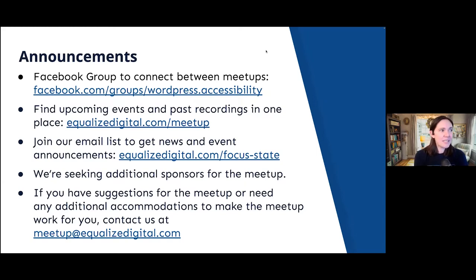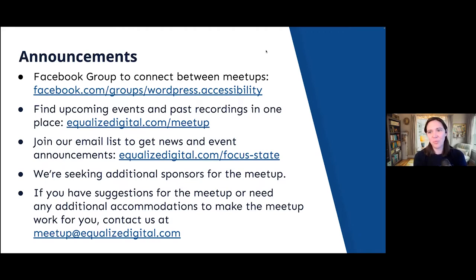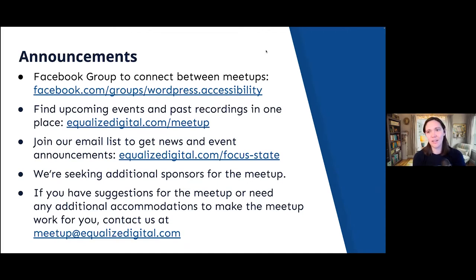We also have an email list where you can get news — we send about twice a month, typically on Wednesdays, but not always because we're tiny and we're volunteers. You can join at equalizeddigital.com/focus-state. We started this because meetup strips all headings out of emails, which was challenging for our screen reader users. So we needed our own properly formatted accessible email list. It's the best place for recaps, new events, and accessibility news.